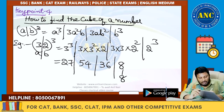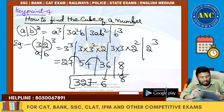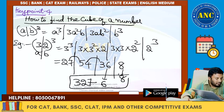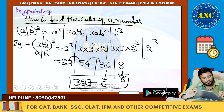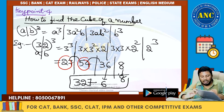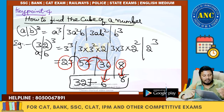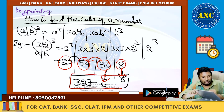Same as (a+b)² method: write only the unit digit. Units digit 6 from 36, carry 3; 54 + 3 = 57, write 7 carry 5; 27 + 5 = 32. Answer is 32768. That is 32³ = 32,768. I hope the idea is clear.